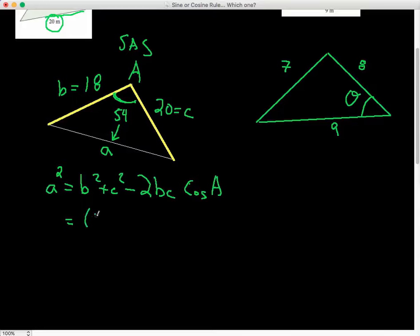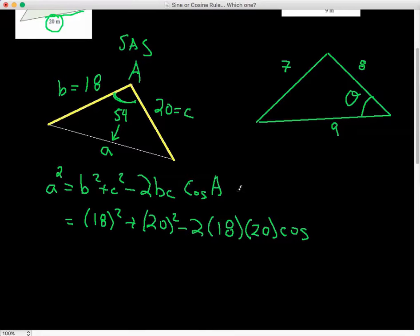So if we have this, now we can start filling in our numbers. So b is 18 squared plus c 20 squared minus 2 times 18, which is b, times 20, which is our c. And it's going to be cos of this angle A. And in this case, it's 54 degrees. And this is all equal to a squared.